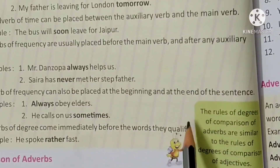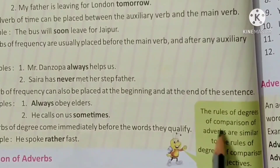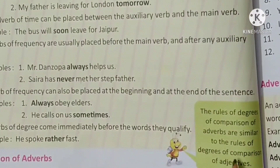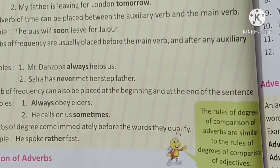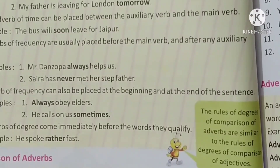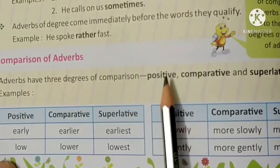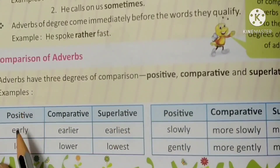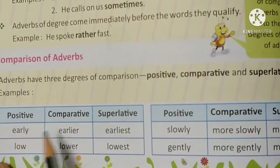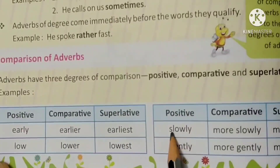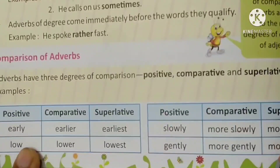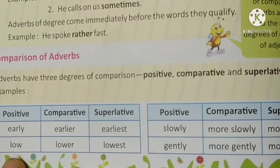Here students, the rules of degrees of comparison of adverbs are similar to the rules for degrees of comparison of adjectives. Adverbs की भी three degrees of comparison होती हैं: positive, comparative, and superlative. Examples: early, earlier, earliest; low, lower, lowest; slowly, more slowly, most slowly; gently, more gently, most gently.